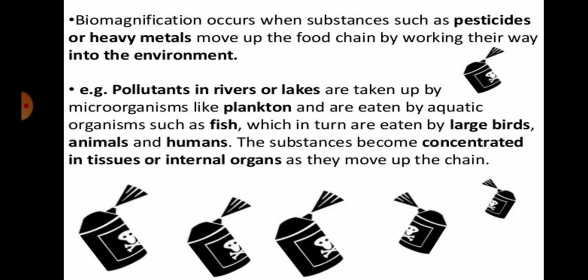The pollutant concentration increases in rivers and lakes and is taken up by small planktons. These planktons are eaten by aquatic organisms such as fish, which in turn are eaten by large birds, animals, and humans. The concentration of these substances increases in the tissue of organisms as they move up the chain. Planktons are very small particles in the aquatic ecosystem; they are eaten by small fish, which are eaten by large fish, which are eaten by humans, animals, or birds.